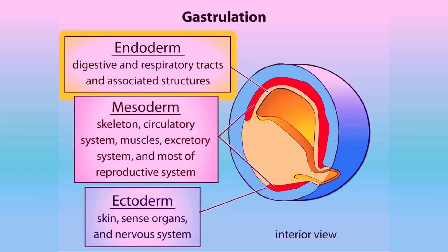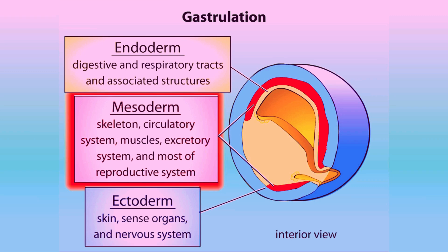The endoderm gives rise to the digestive and respiratory tracts and associated structures. The mesoderm gives rise to the skeleton, circulatory system, muscles, excretory system, and most of the reproductive system.